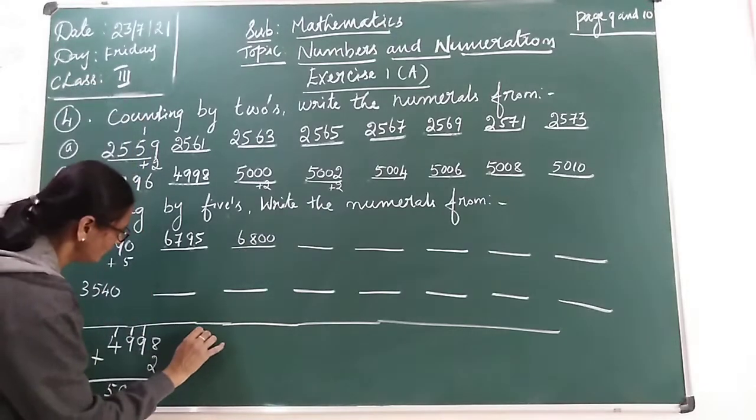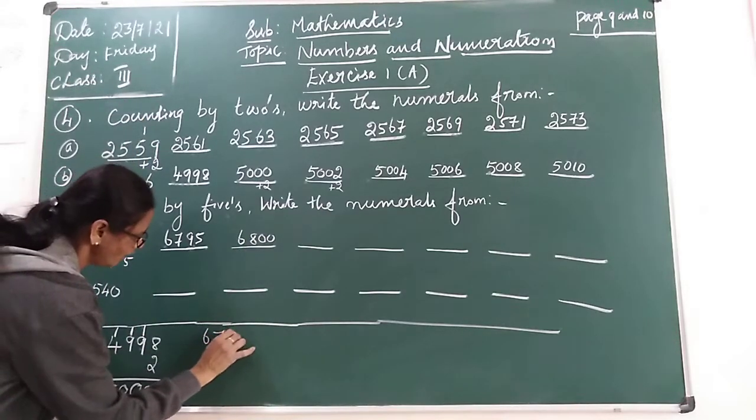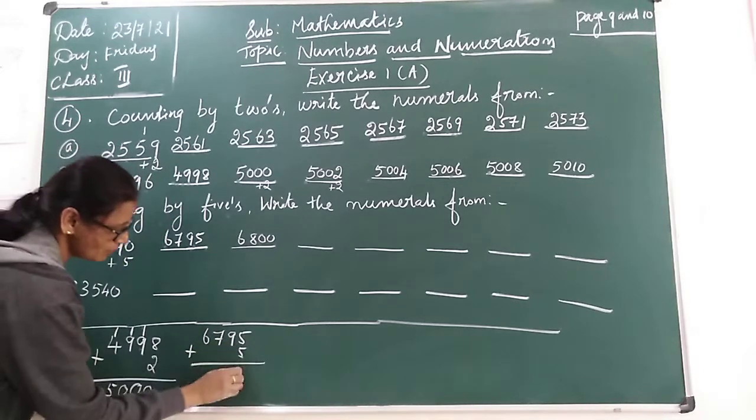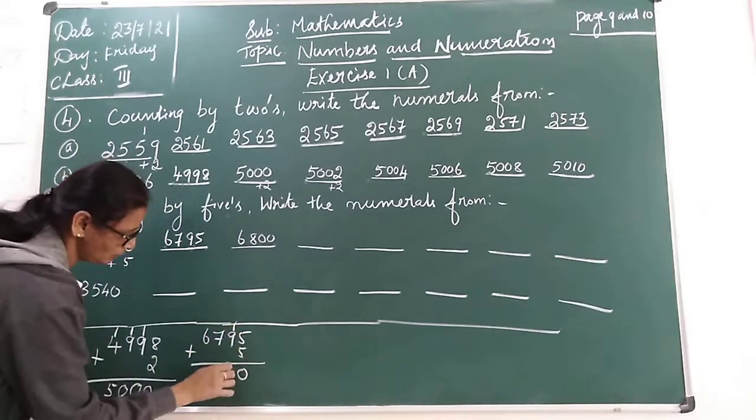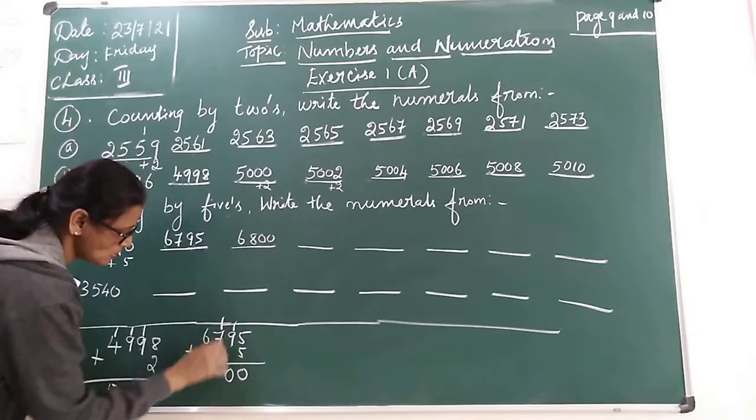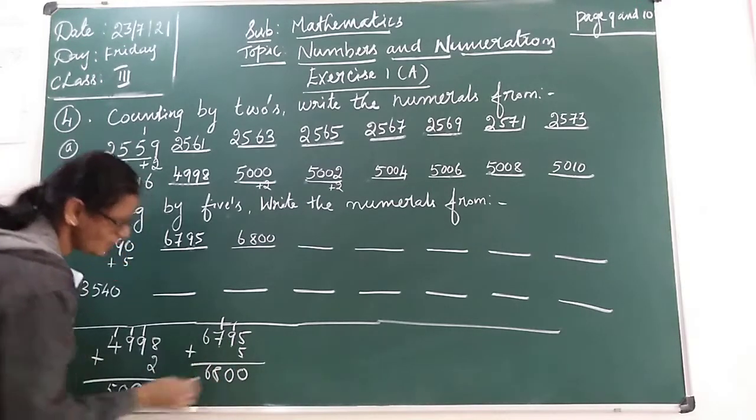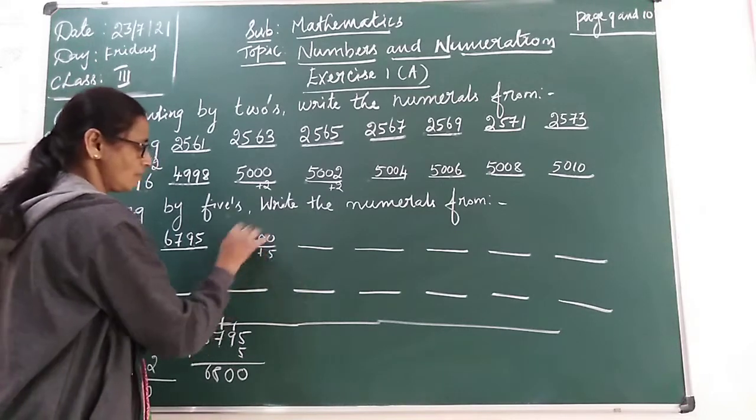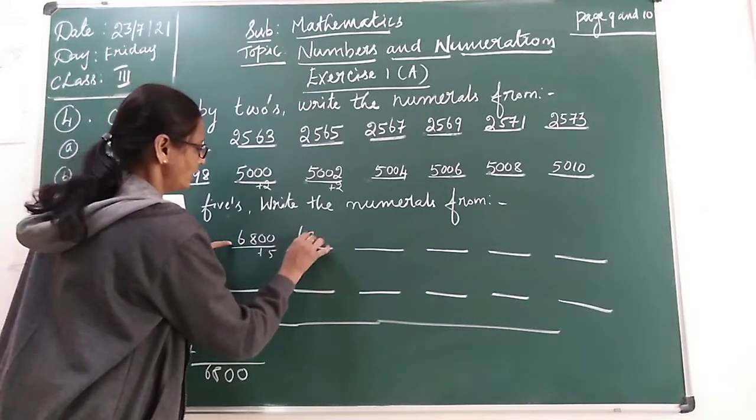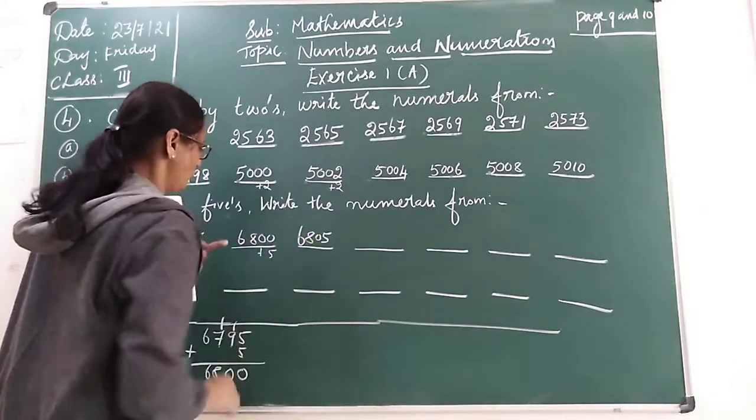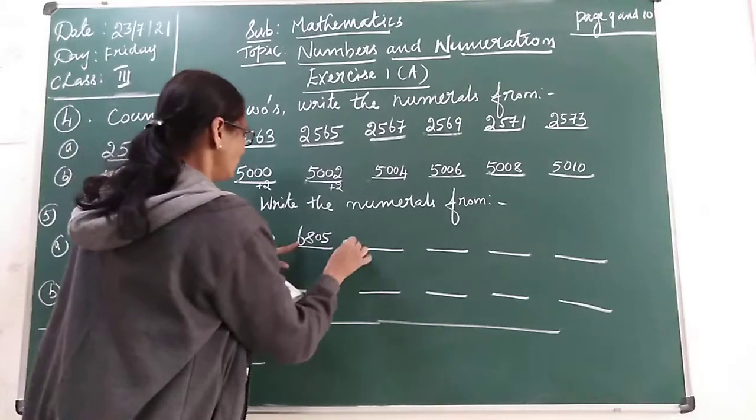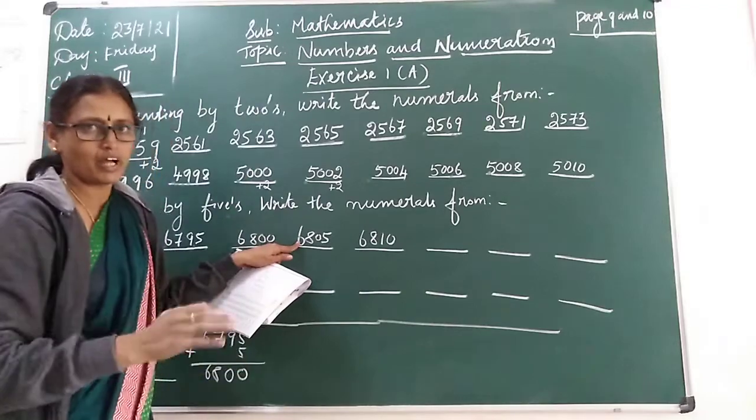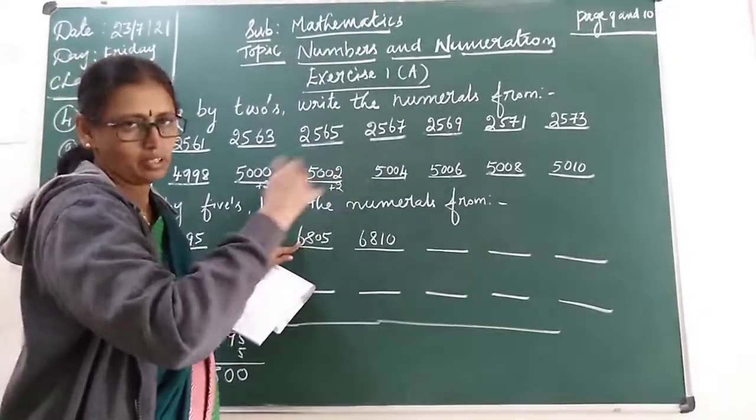If you don't know, you write like this. 6795 plus 5. 5 plus 5 is 10. Carry over 1. 9 plus 1 is 10. Carry over 1. The number is 8. 6800. Next, add 5. Now, 6805. Next number, 6810. 5, 10, 15, 20 like that.